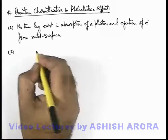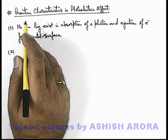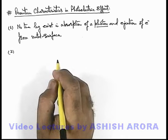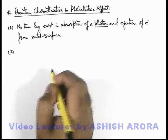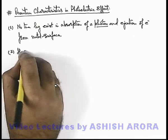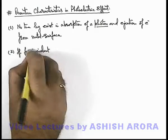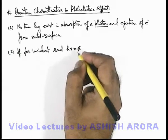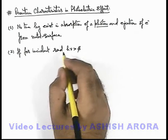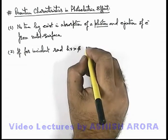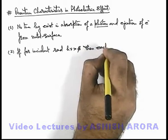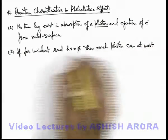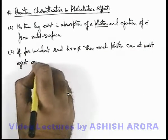Another point about quantum energy: the photon, which is a quantum of energy, can either be absorbed or not absorbed — its energy cannot be used in parts. So we can say, for incident radiation where hν is greater than φ (the work function), all the photons are energetically capable of ejecting an electron. For incident radiation where hν > φ, each photon can at most eject 1 electron only.